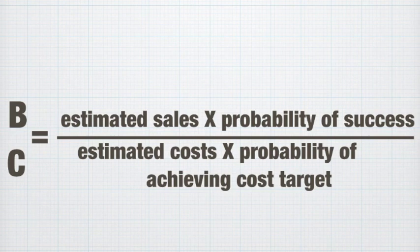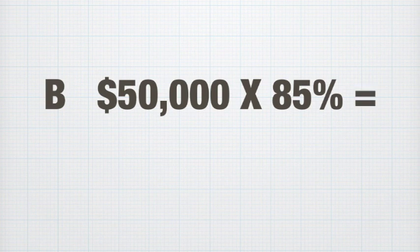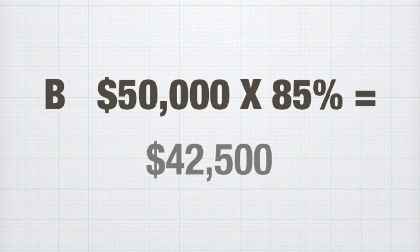When we actually run the ratio, it looks like this. We assume that we have made the decision to work on a project that we project will generate $50,000 worth of revenue. And we're going to say that our assurance that we can hit that projected amount, or the probability, is 85%. We run the top portion of this equation by multiplying $50,000 by 0.85, and the expected revenue is $42,500.